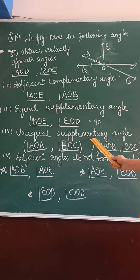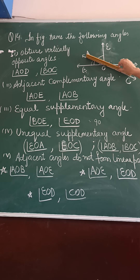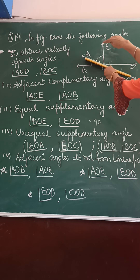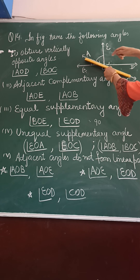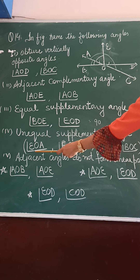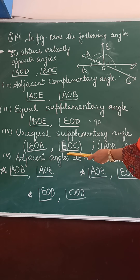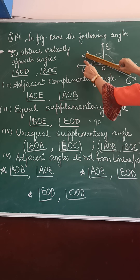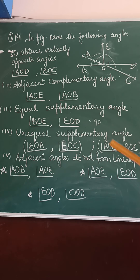Fourth part: unequal supplementary angle. Unequal supplementary angles means the sum is 180 degrees. On line A, O, D, using line AC, we get angle A, O, E and E, O, C — these two angles are supplementary angles. So we write A, O, E and E, O, C. You can also write it as E, O, A and E, O, C. Second pair: A, O, B and B, O, C — they are also unequal supplementary angles.